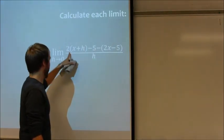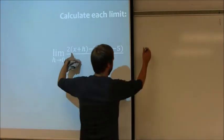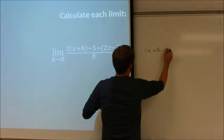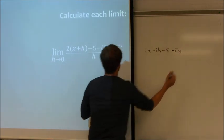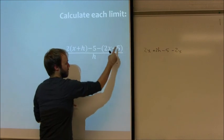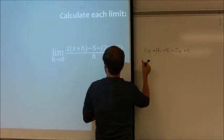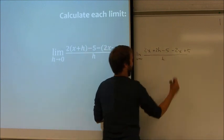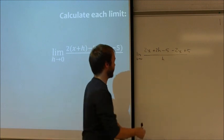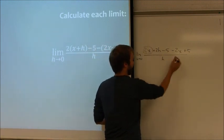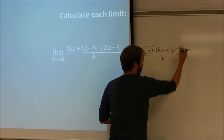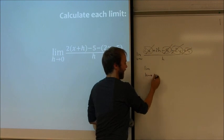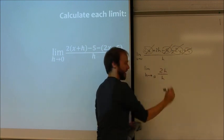So I'm going to multiply out my parentheses here. That's going to be 2x plus 2h minus 5, minus 2x. Be careful here. This negative gets applied to both of those values. So that's going to be a plus 5. And we want the limit as h approaches 0. And fantastic things are going to happen because you're going to see a bunch of cancellations. I have a 2x and a negative 2x. Those cancel. I have a 5 and I have a negative 5. Those cancel.